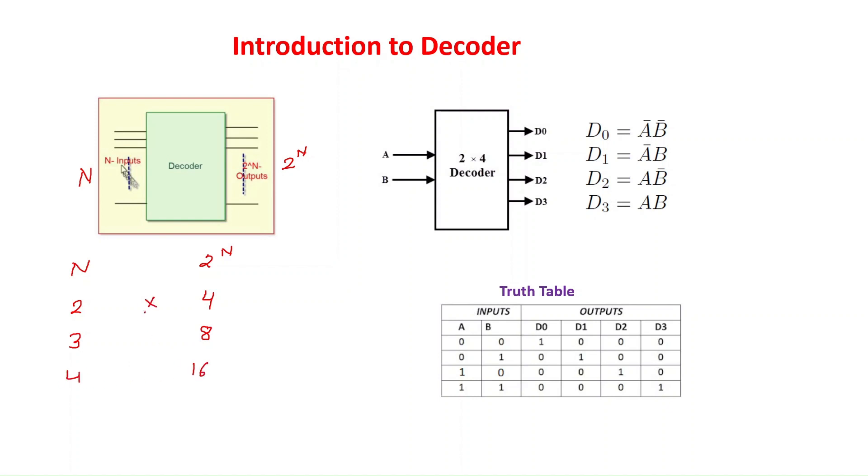So decoder size is always n × 2^n. Therefore, 2×4, 3×8, and 4×16.